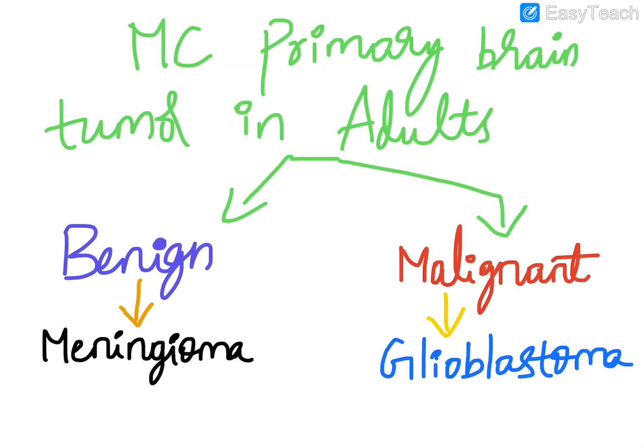The most common benign primary brain tumor in adults is meningioma. The most common primary malignant brain tumor in adults is glioblastoma.